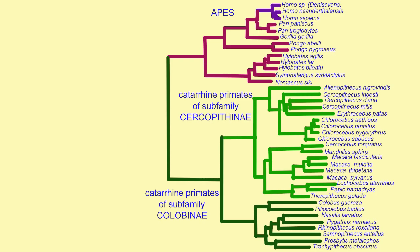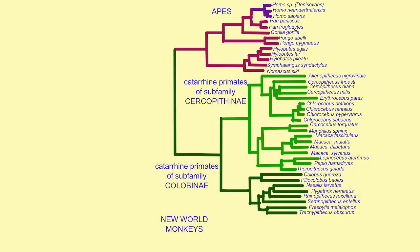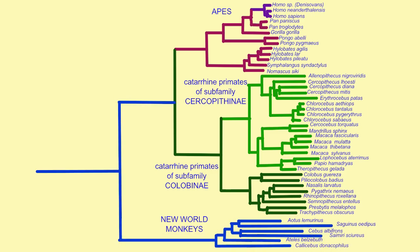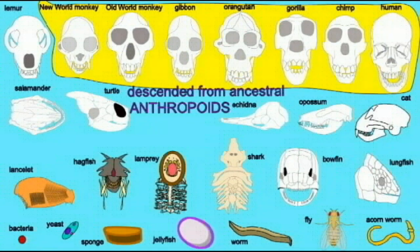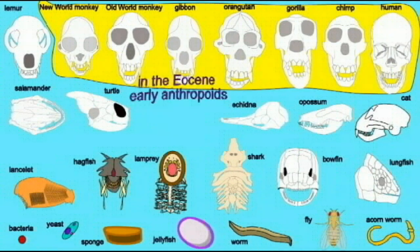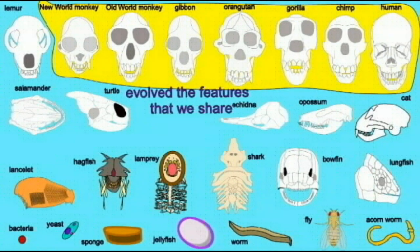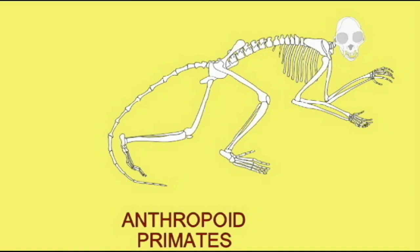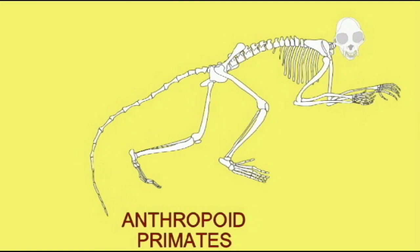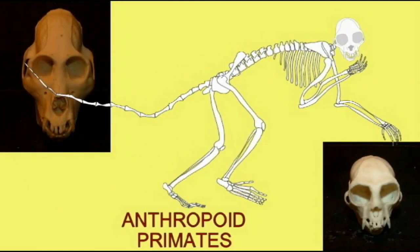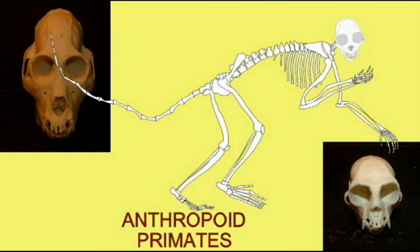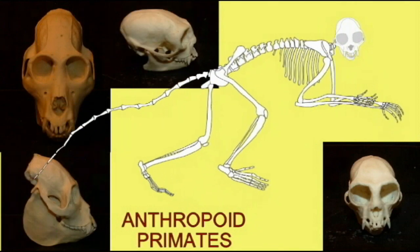While the catarrhine primates of old-world monkeys and apes form a group, together they form a larger group with the new-world primates — the monkeys found in Latin America. Together they are called anthropoids. The sequence comparisons of mitochondrial DNA support not only the relationships of new-world monkeys being more closely related to each other than any are to the old-world monkeys, but also that anthropoid primates form a group.